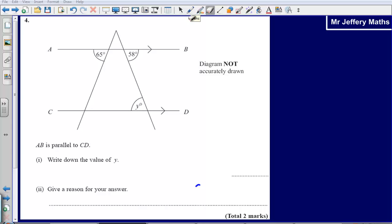This is question 4 from the 2008 calculator paper. Here we are asked to write down the value of y. We are told first of all, this is important, that AB is parallel to CD, so this line here is parallel to this line down here, so we are dealing with parallel lines.